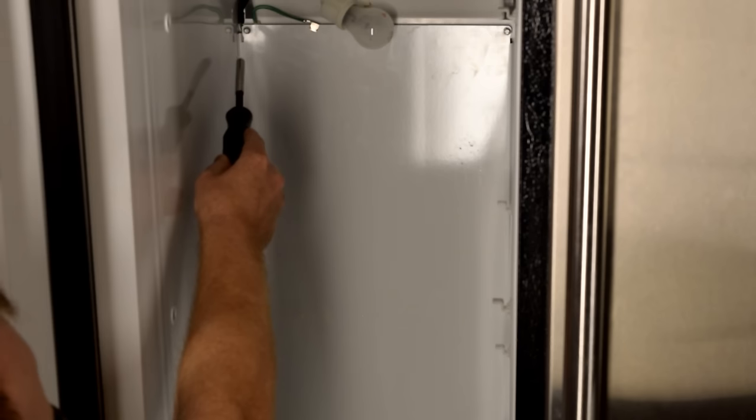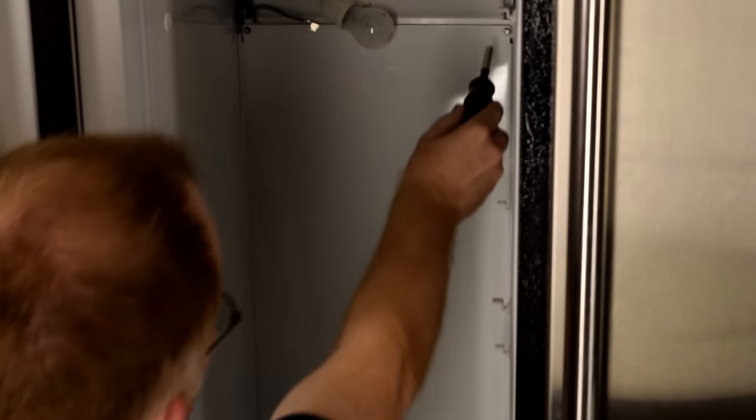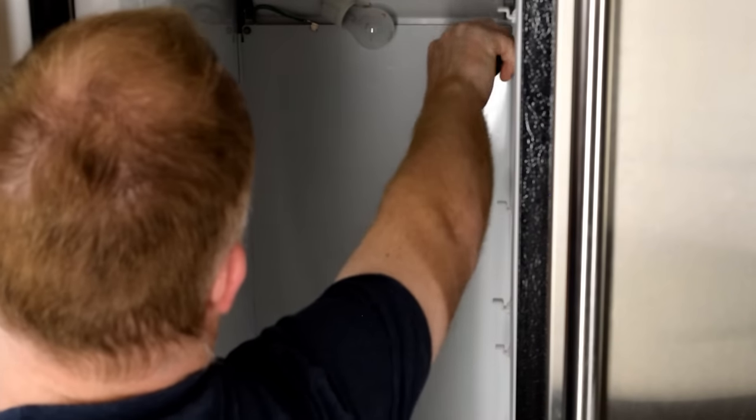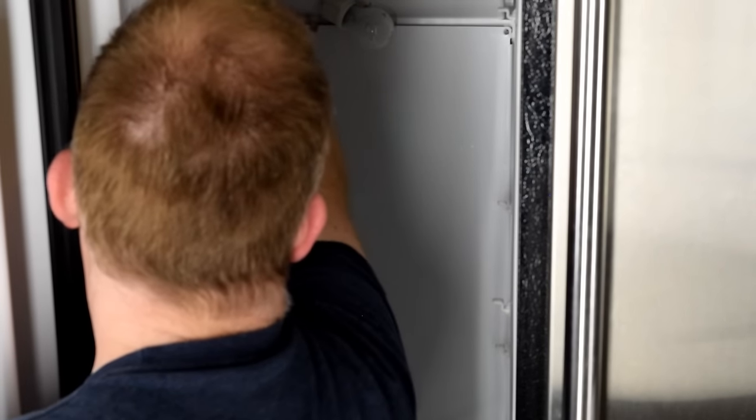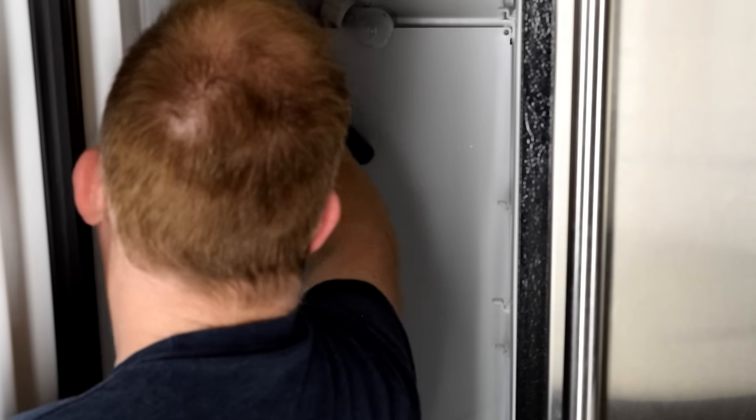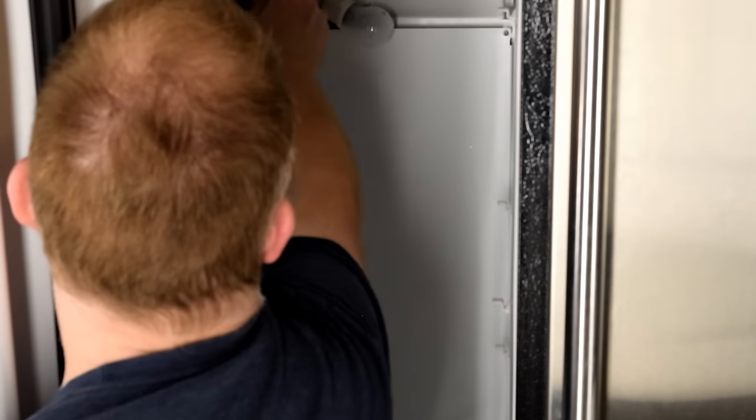To access the thermistor, you'll need to remove all of the drawers and the shelves from your freezer side. Again, with the power unplugged, what we'll do is remove two quarter-inch nuts with our nut driver from the top right and the top left of this back panel. Once those are removed, you may have a ground clip. It's a green wire that's clipped to the top of that panel. Just go ahead and pull that off with your fingers.